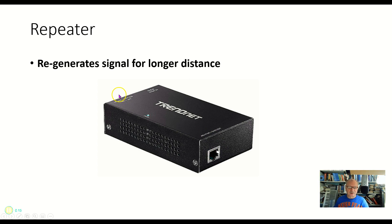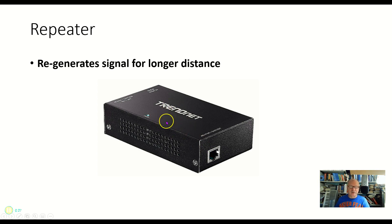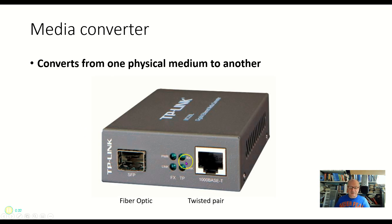another twisted pair cable on the back side that you can't see here, and this would regenerate the signal. Twisted pair cable only goes for 100 meters, so if you want to go further you might use a repeater to do that. There are repeaters of course for other types of cables as well.